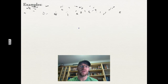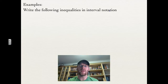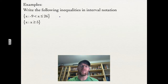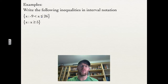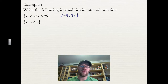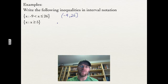Now some examples: write the following inequalities in interval notation. The first one is negative 9 is less than x, which is less than or equal to 26. We use open curved brackets for anything without an equal sign, and square brackets for anything with an equal sign. So this is simply written as open bracket, negative 9, all the way to 26, square bracket. Be careful not to confuse these brackets with coordinate points.